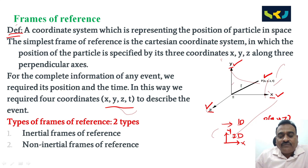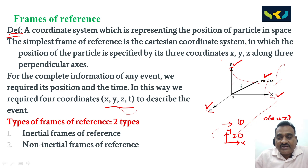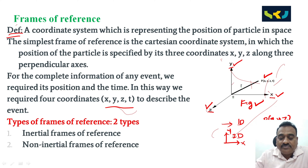For the complete information of any event, we require its position and the time of occurrence in a frame of reference. We require four coordinates — x, y, z, and t — to describe the event. This reference frame is known as the space-time frame of reference, shown clearly in the figure as a Cartesian system with x, y, z with respect to time.